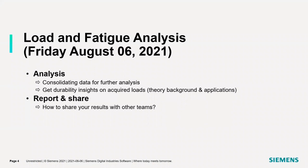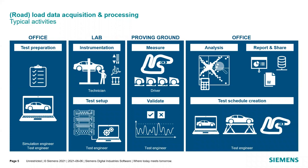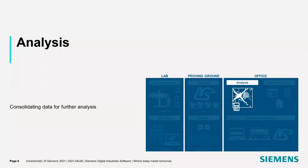As introduced, the session today will be on load and fatigue analysis. For those of you who followed the session on Monday, this slide explains the different activities of a typical durability test campaign — from test preparation over to instrumentation, test setup, measure, validate, and then in the office: analysis, reporting, sharing, and test schedule creation. The session on Wednesday ended with validating the data after the measurement. So the next step is to further analyze the data and make a report out of it.